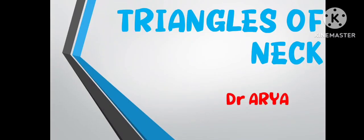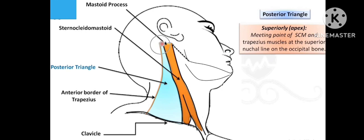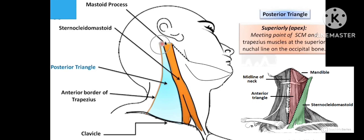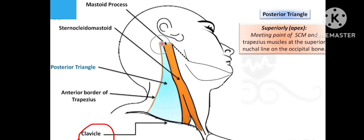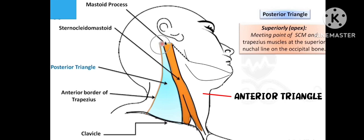Hi, hello and welcome back to my channel. In this video, we will talk about triangles of the neck, which is one of the most important questions from head and neck. I will explain using this picture, which is the side view of the neck. The quadrangular area is divided by two triangles — one is the anterior and the posterior triangle.